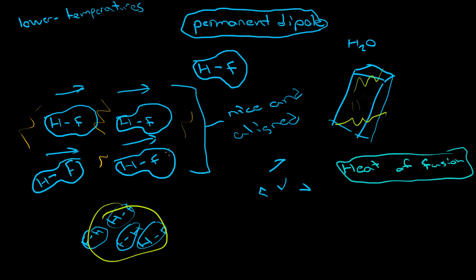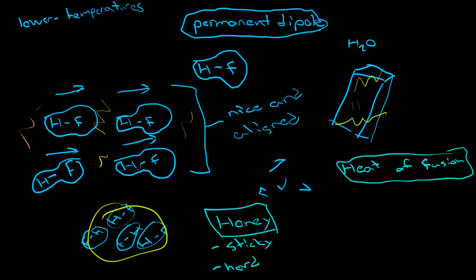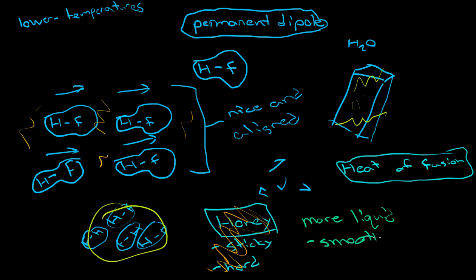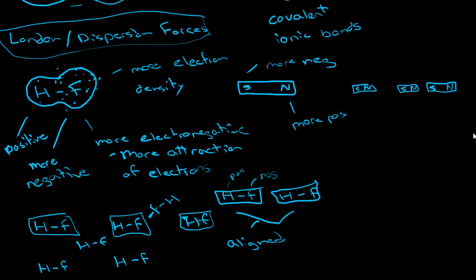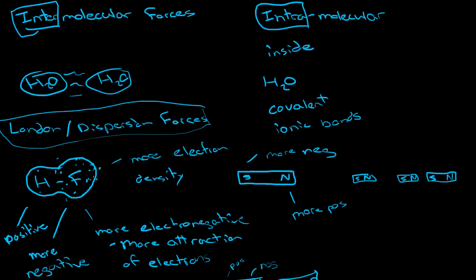This also has to do with viscosity. Honey is very sticky and hard to pour because of its viscosity. But if we add heat to honey, it becomes more liquid — smoother — because its viscosity changes. We're adding thermal agitation, breaking up the intermolecular bonds. That's a general overview of how these intermolecular forces operate.